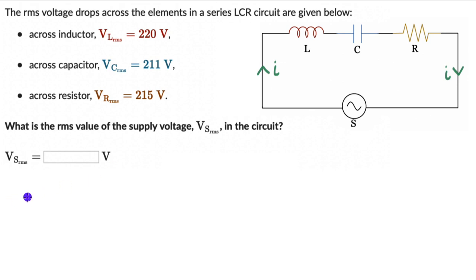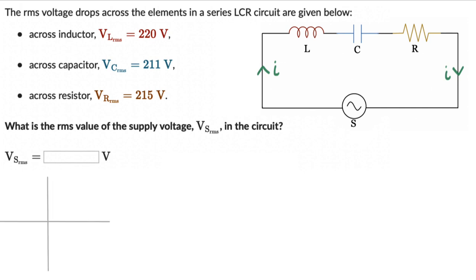To find the resultant of the voltages across these three components, we can draw phasor diagrams, and the resultant phasor can give us the supply voltage. Let's think about a reference to draw the voltage phasors. I'll draw the phasor for the current at any random angle — here I've drawn it horizontally on the x-axis. Using our knowledge of whether voltage leads, lags, or is in phase with the current, we can draw the voltage phasor of each element, and the resultant gives us the supply voltage.